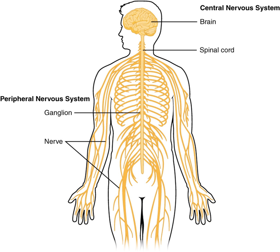The tectum, pre-tectum, cerebral peduncle, and other structures develop out of the mesencephalon, and its cavity grows into the mesencephalic duct or cerebral aqueduct. The metencephalon becomes, among other things, the pons and the cerebellum; the myelencephalon forms the medulla oblongata, and their cavities develop into the fourth ventricle.